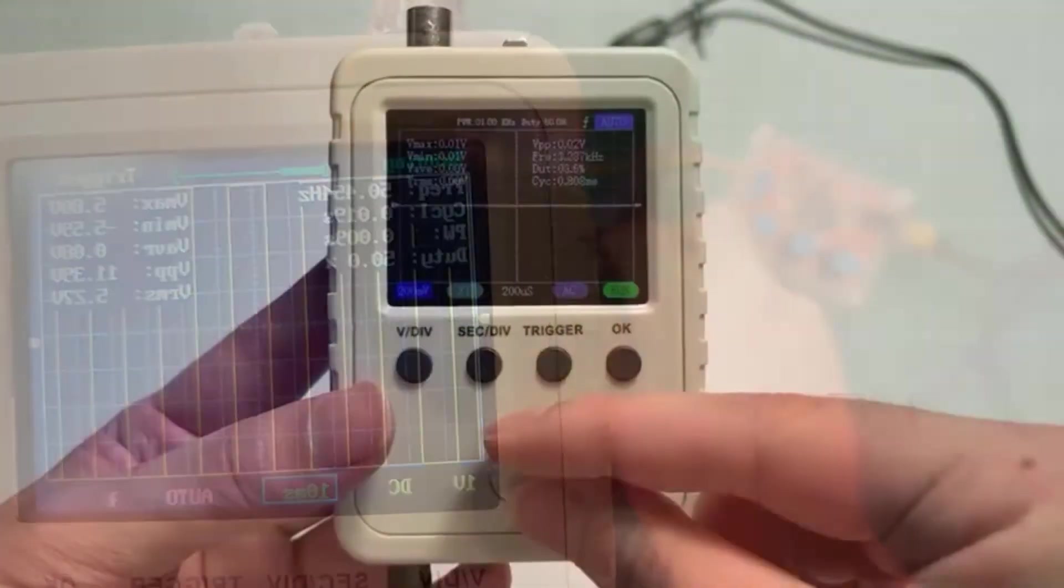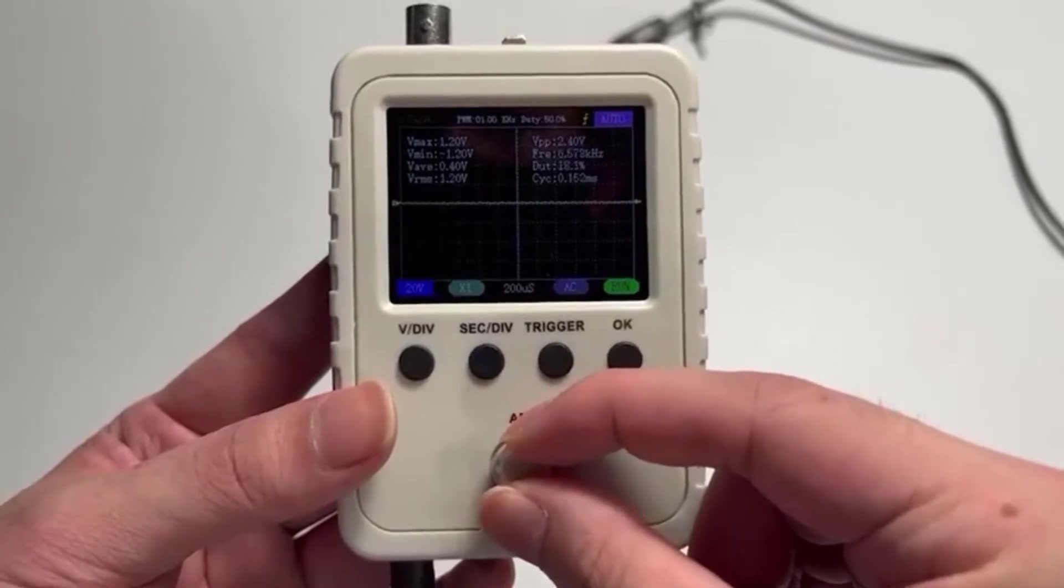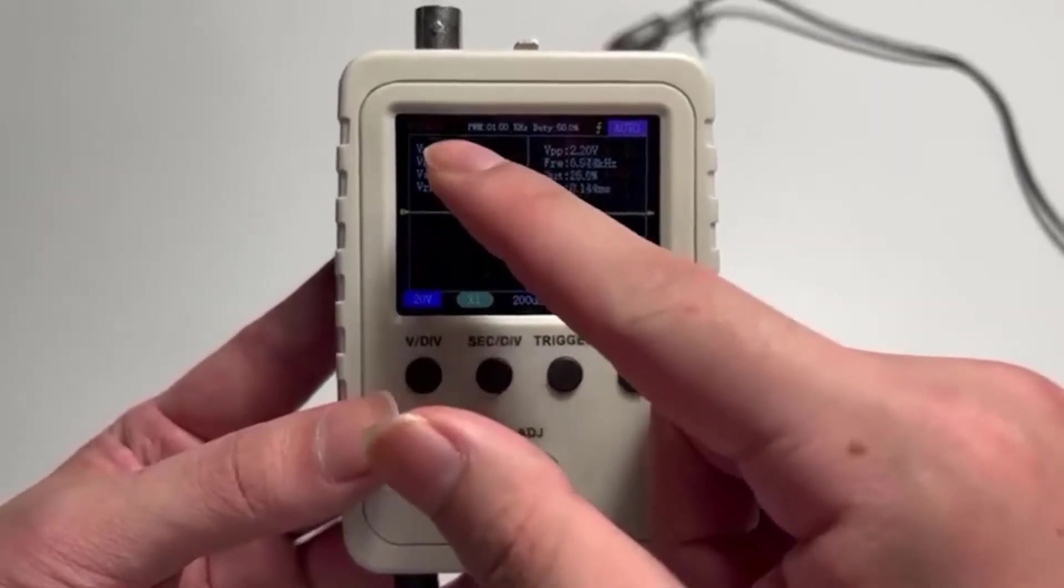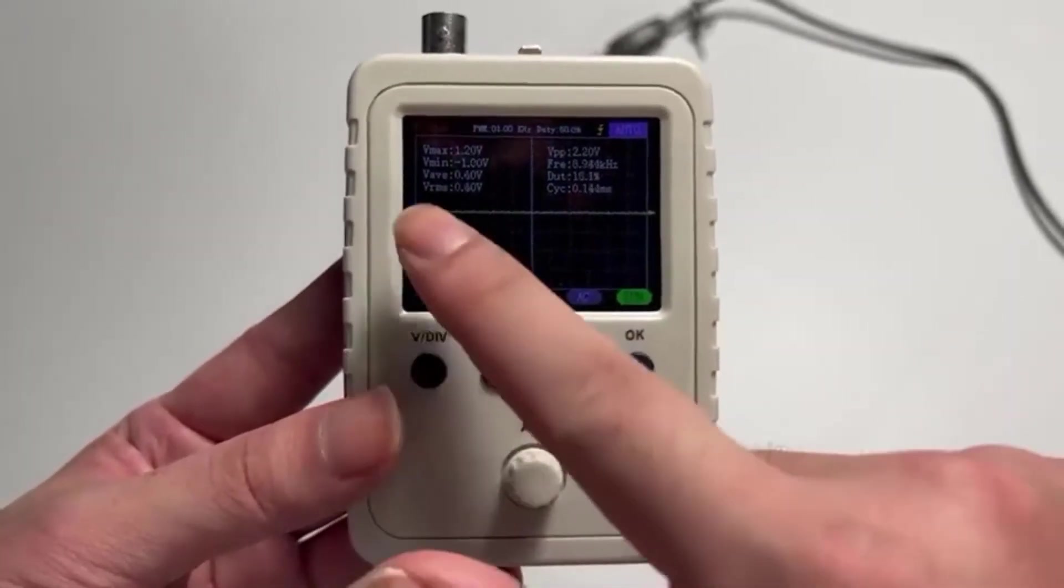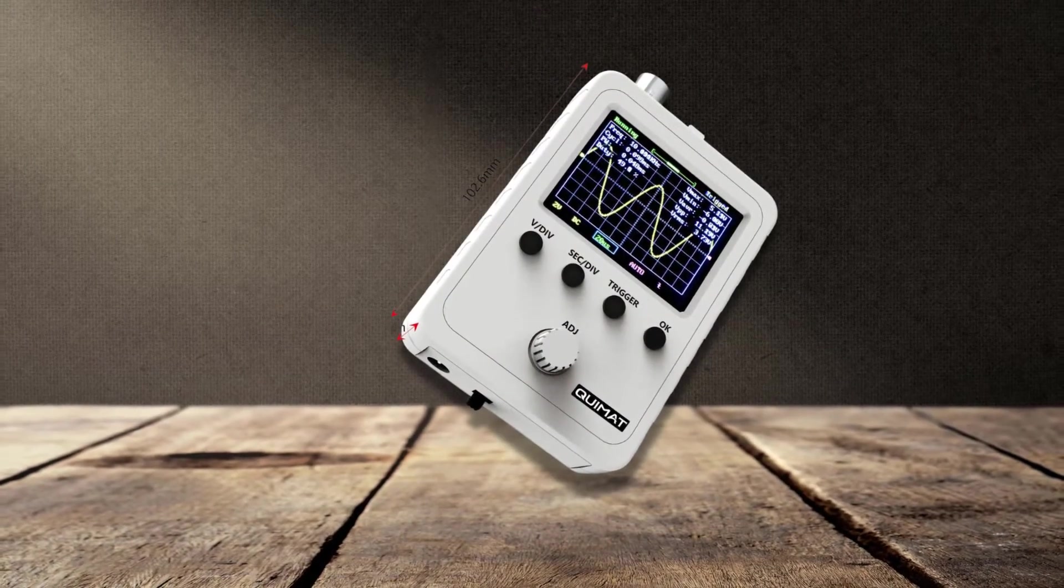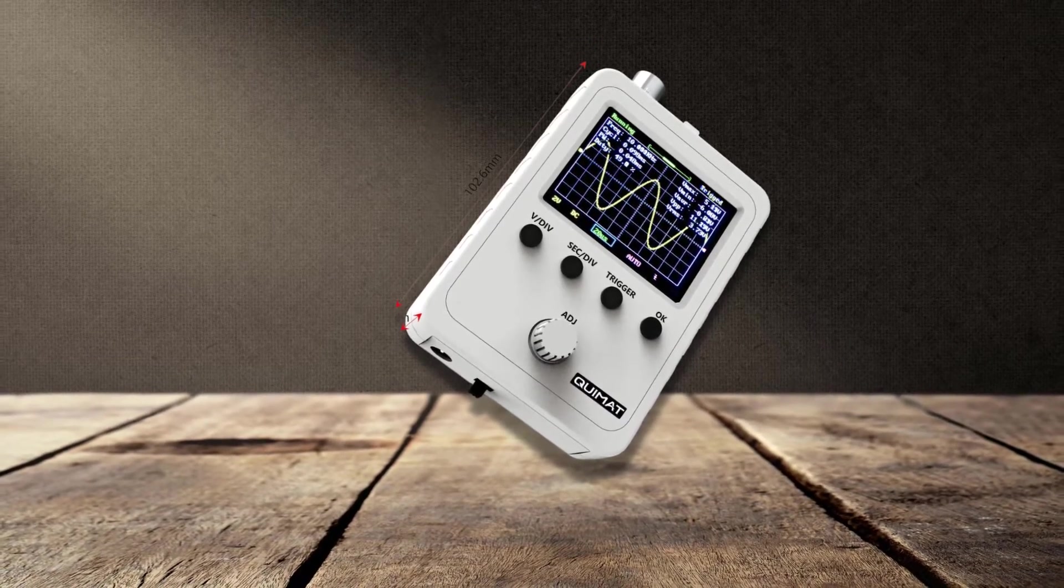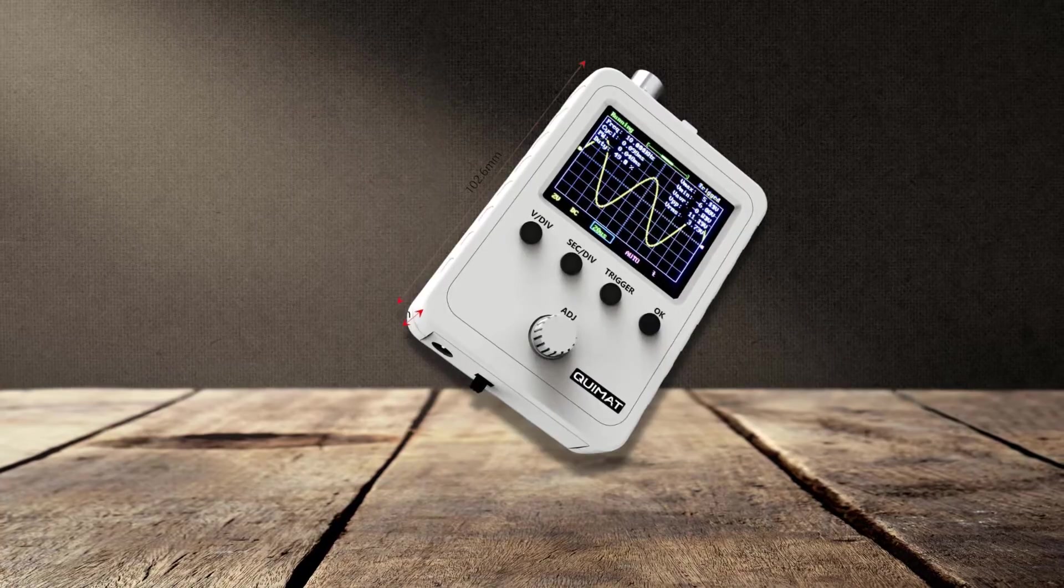You will get an assembled oscilloscope, BNC clip cable, and a power supply. Detailed operation instructions troubleshooting guide and schematic are also provided. The power switch and power supply connector port are on the underside of the device and the BNC signal input connector, test signal output, and AC-DC-slash-ground coupling switch are located on the top of the device.